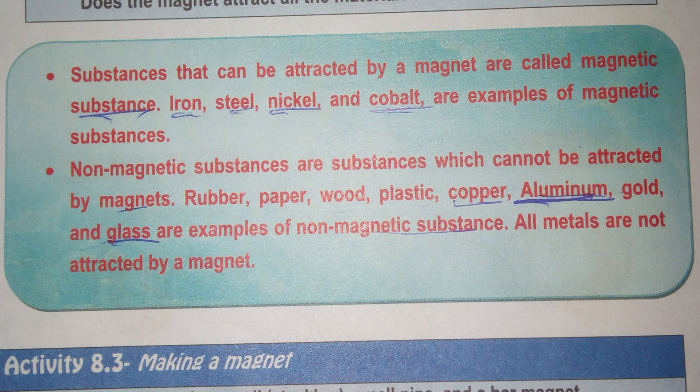Non-magnetic substances are substances which cannot be attracted by a magnet. Examples of non-magnetic substances include rubber, paper, wood, plastic, copper, aluminum, gold, and glass. Note that all metals are not attracted by a magnet.